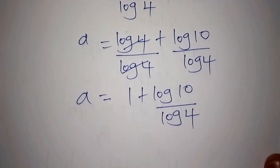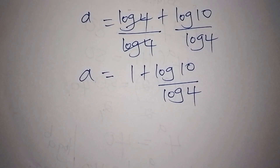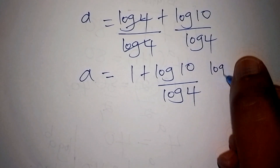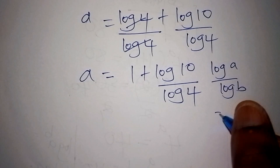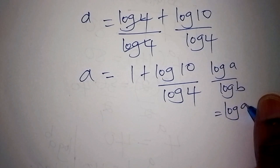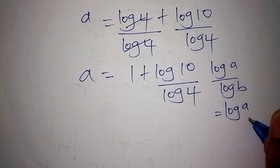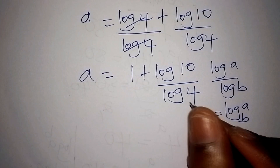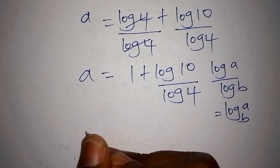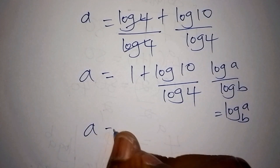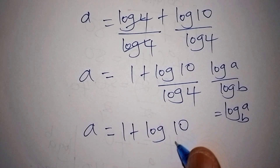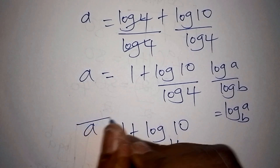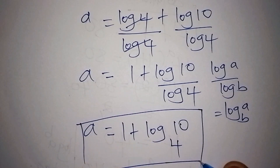We also know that log of a over log of b can be written as log of a to the base of b. So we can conclude that our value for a is equals to 1 plus log of 10 to the base of 4. This is our correct answer for the value of a.